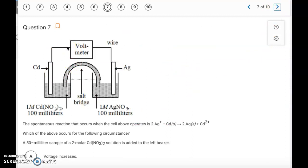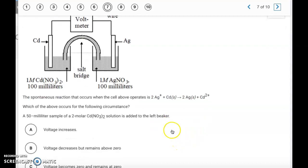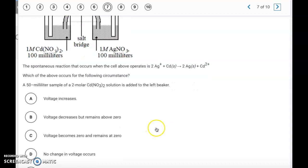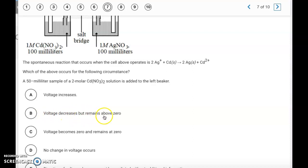Okay, number seven. We have another galvanic cell. So this says it's a spontaneous reaction. So we know we have a positive voltage. Which of the above occurs for the following circumstance? So we have a 50 milliliter sample of a 2 molar cadmium nitrate solution is added to the left beaker. Now the volume doesn't matter. The only thing you're concerned about here is the molarity. Standard conditions are 1 molar. So if we're going to increase the molarity of the cadmium, this is going to cause the Q value to be greater than 1, and that's going to cause the voltage to decrease. Another way to think of it, you can kind of think of it in terms of Le Chatelier's principle. If we're going to increase the product, it's going to shift away from it. So a shift left is going to decrease the voltage. It's still going to remain above zero, but it's going to be a lower voltage. So letter B, the voltage will decrease but remains above zero.